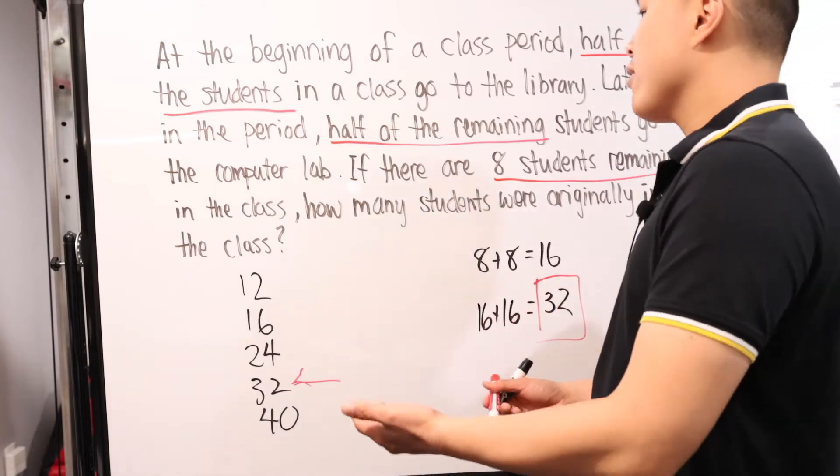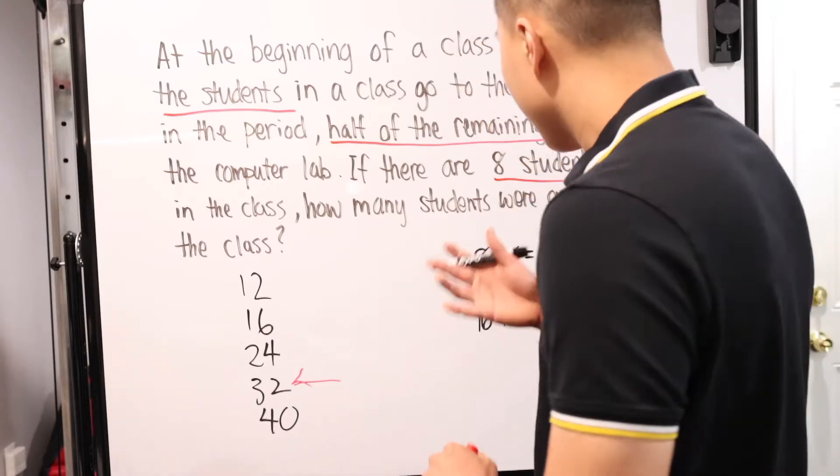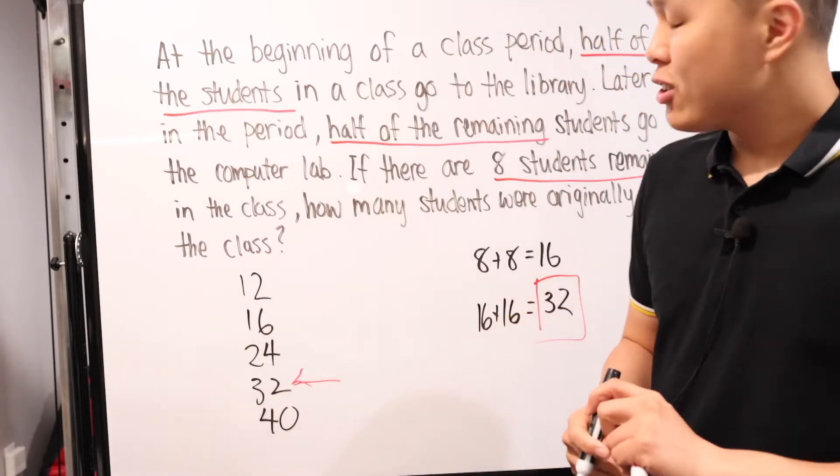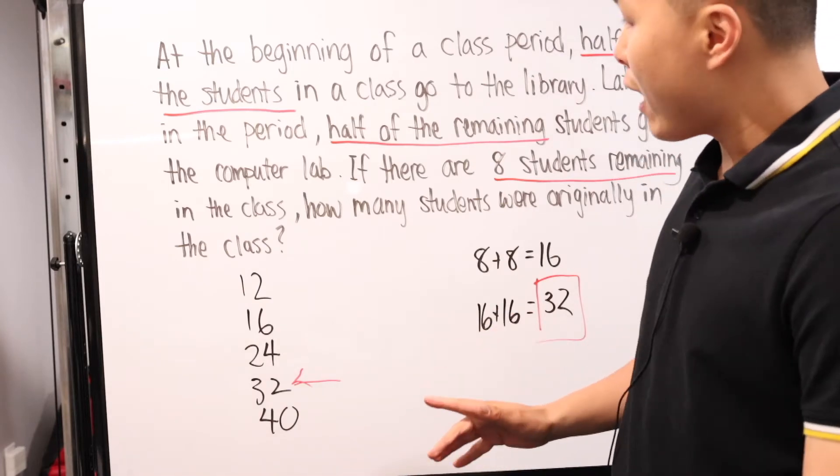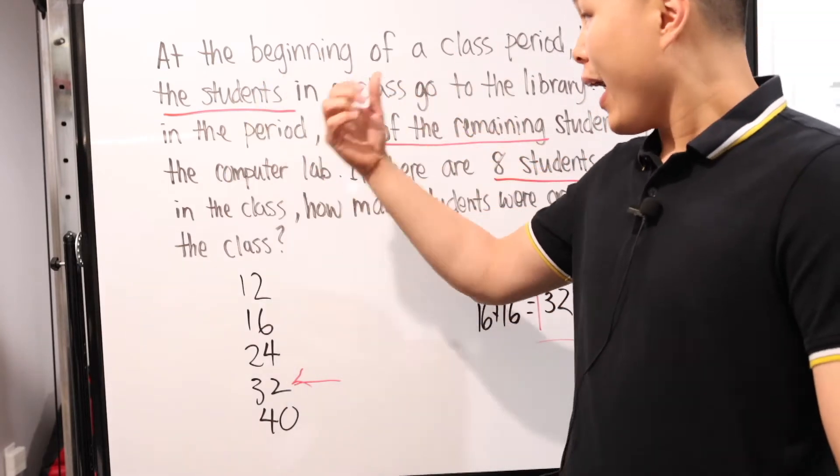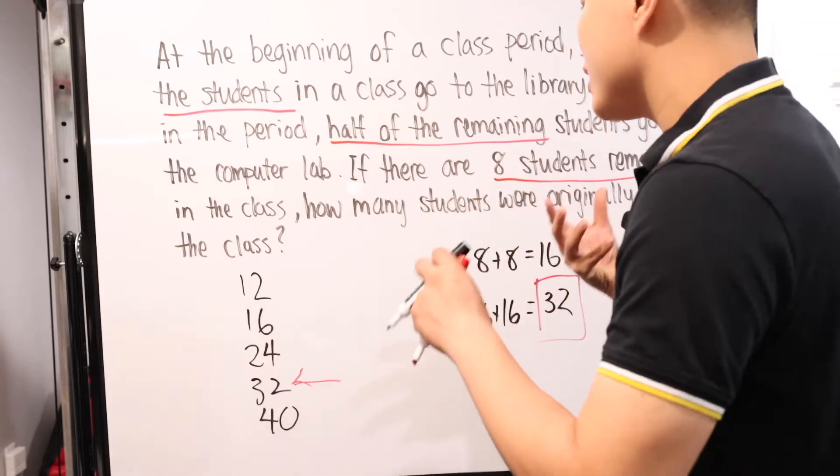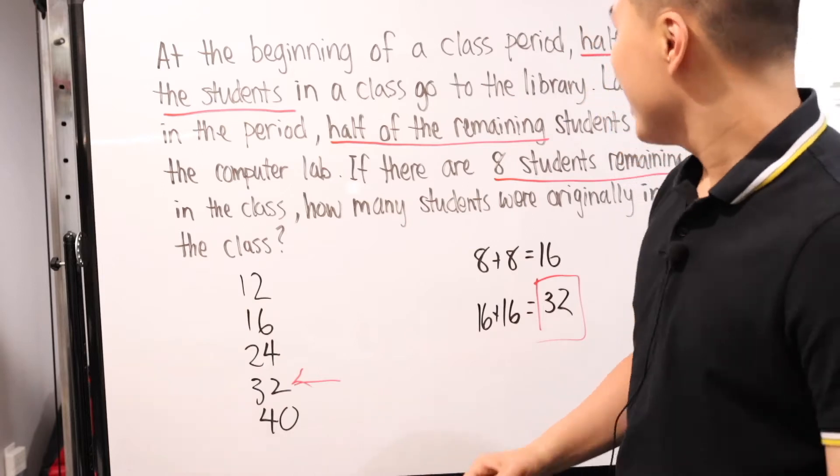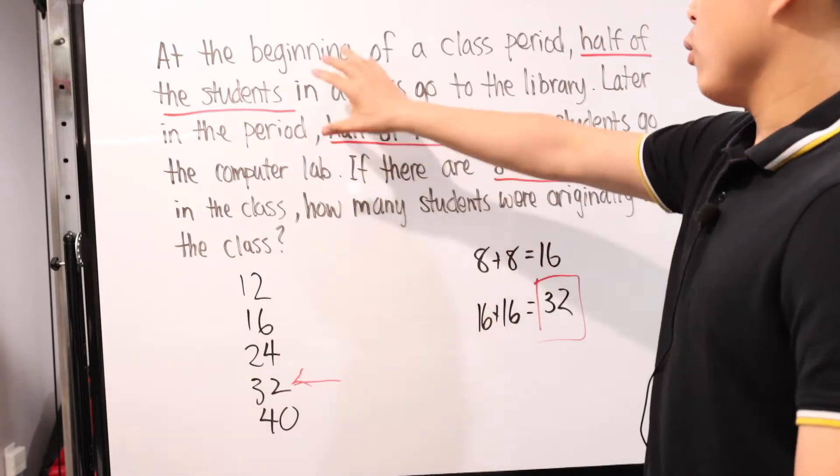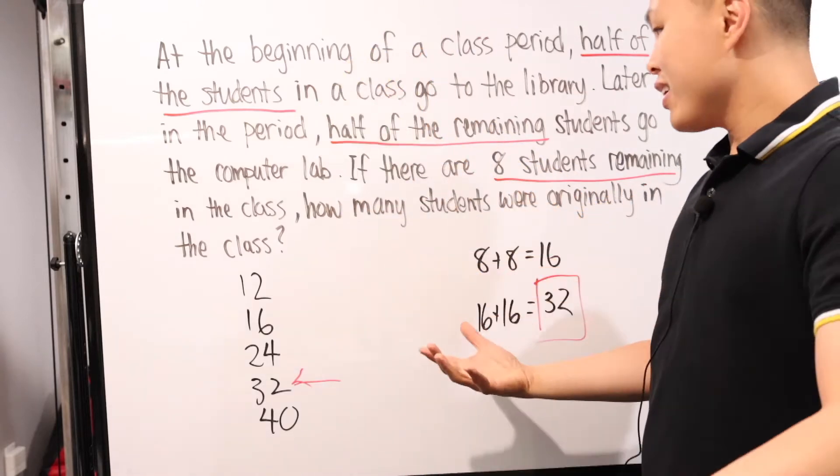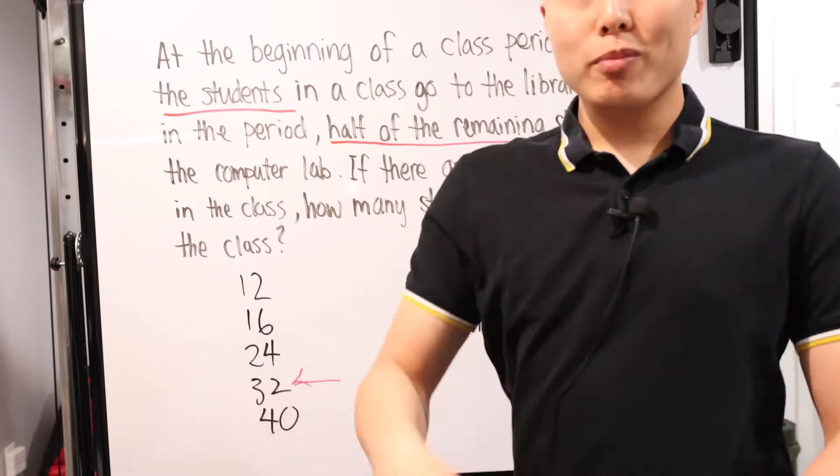And then before that, remember 16 was half of the number of students who basically did not go to the library. So that means 16 and 16 is 32. Backwards twice. This is most likely our answer. Simple as that. Rather than having to go through the trouble of trying to set up equations, in certain situations where they basically map out step by step what happened every single phase until the end result, you can always use this test-taking strategy of getting the end result and going step by step backwards.